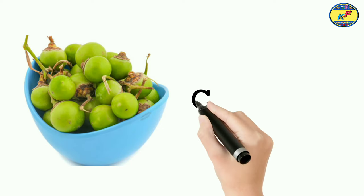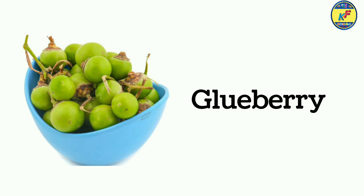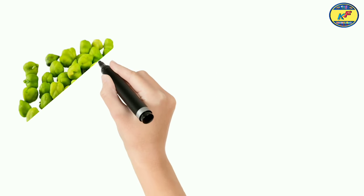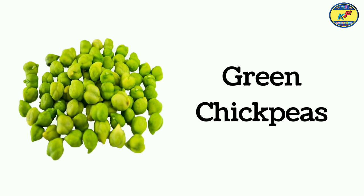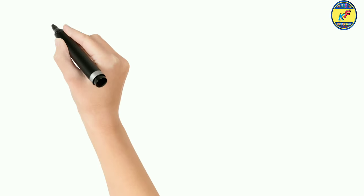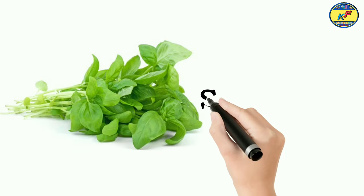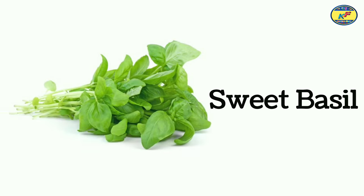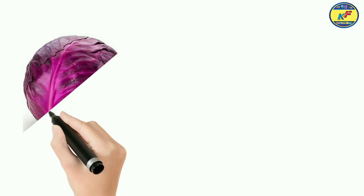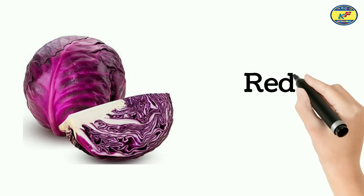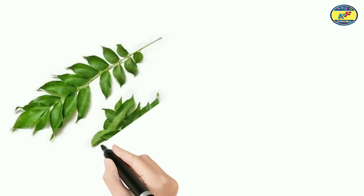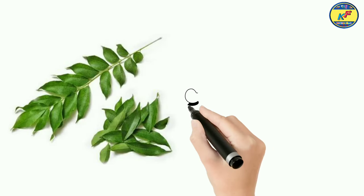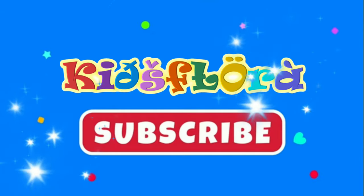Blueberry. Blueberry. This is sweet basil. Red cabbage. Red cabbage. Last is curry leaves. Curry leaves. Thank you. Please subscribe to Kids Flora.